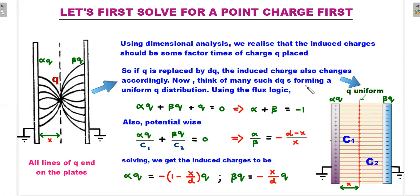Now think of many such dqs forming a uniform q distribution. Since the plates are infinitely large, wherever I place this q, all the flux lines emanating from the charge have to end on these two plates. If I place the charge and distribute it as dqs—many dqs on this entire plane—think of this plane which is at a distance x from the left one as the distributed charge of this q.